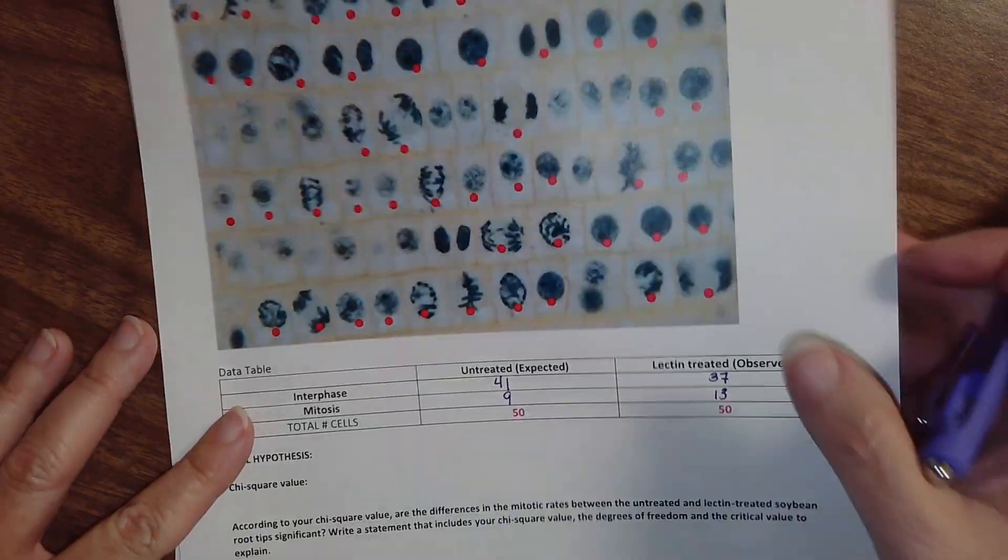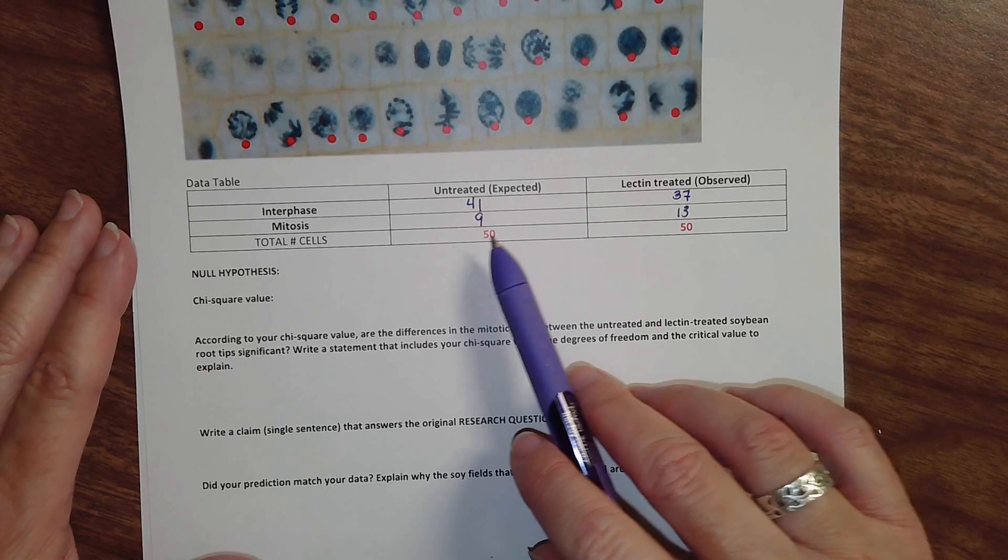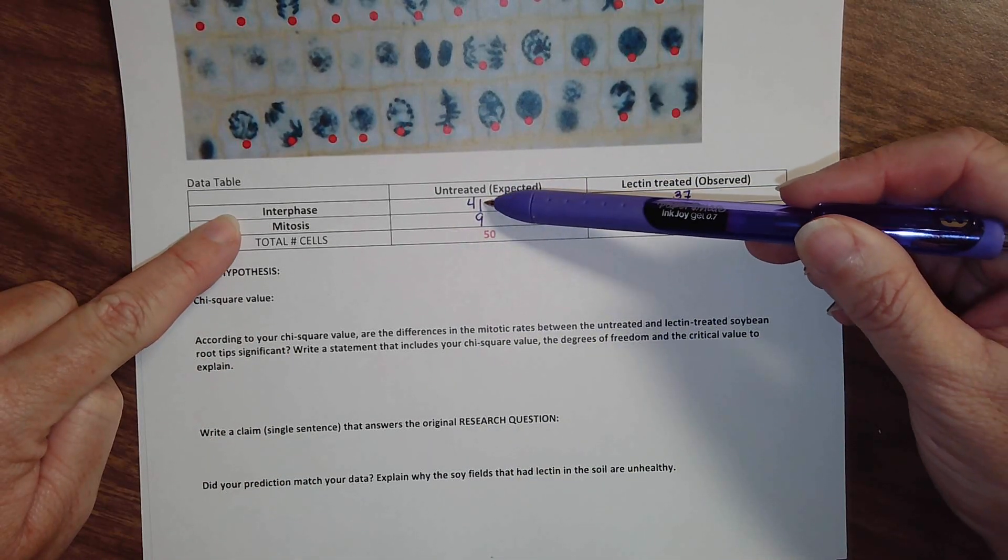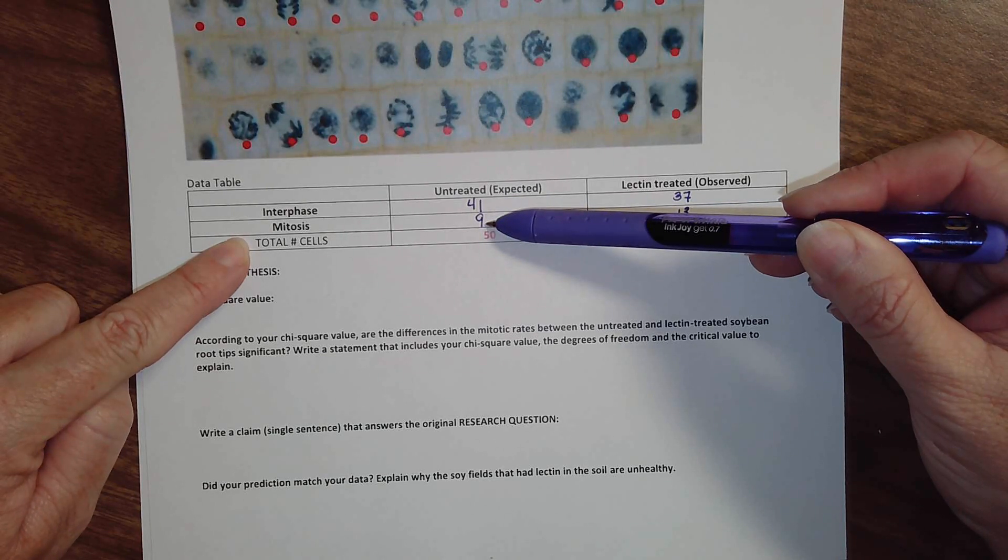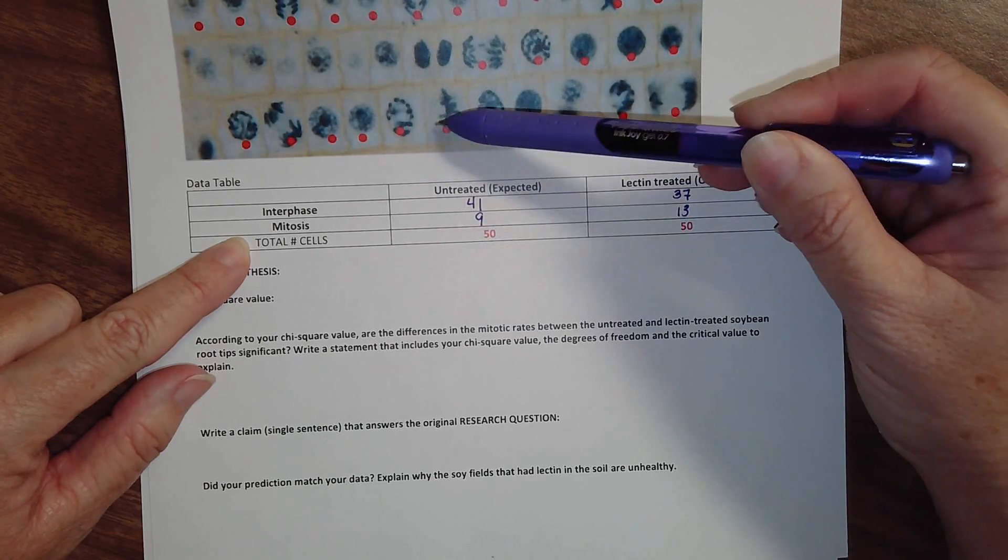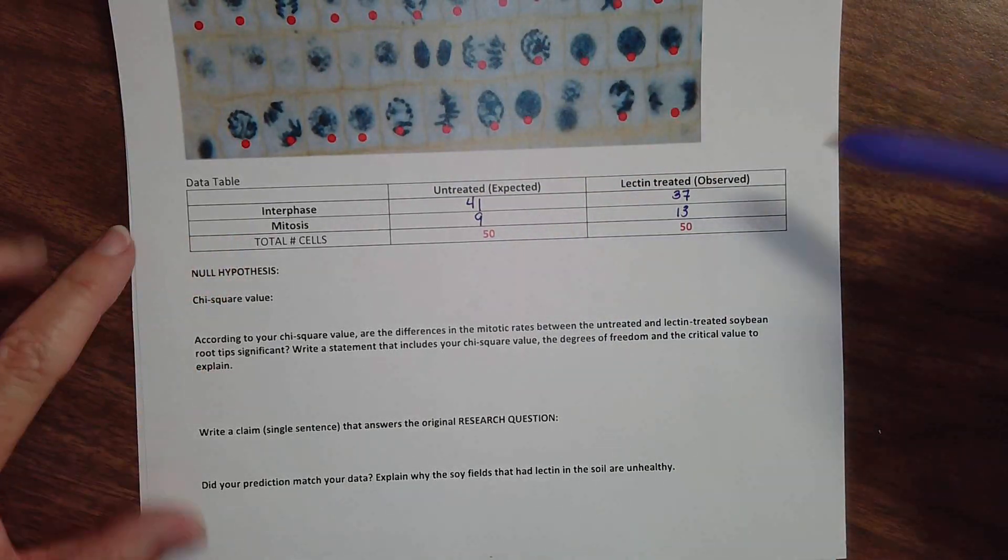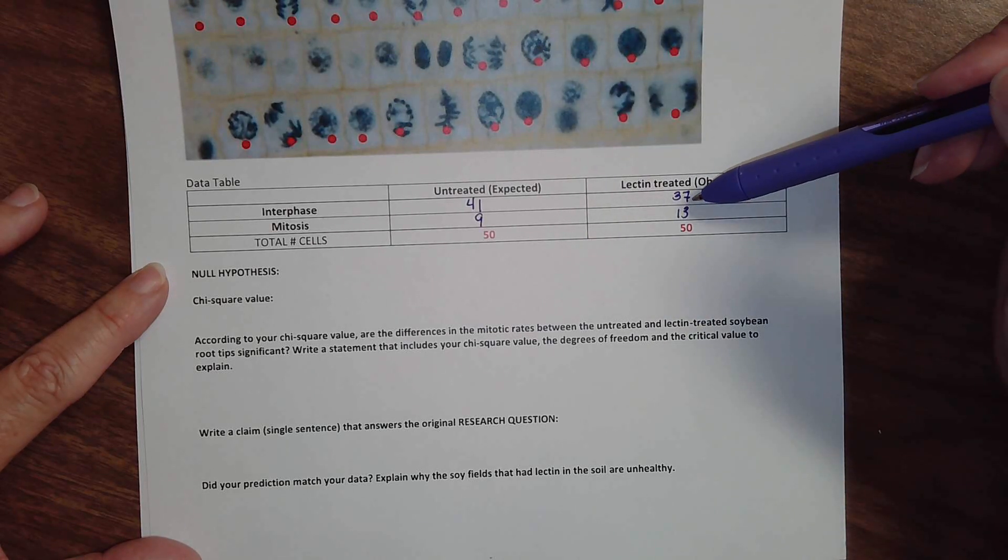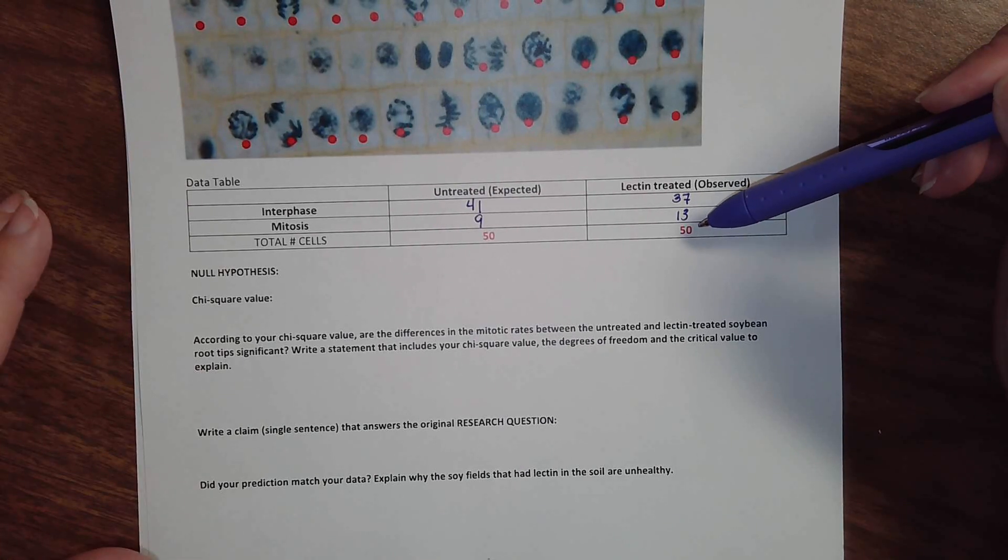So I made up some data. Don't use this data when you do your problem because I just made it up. I didn't even count. I said for the untreated that in interphase there were 41 and for mitosis there were 9. And really what I would do is just count the ones that were in interphase and then subtract because there's 50 for each. For this lectin treated one I said that there were 37 in interphase and 13 undergoing mitosis of any one of the phases.